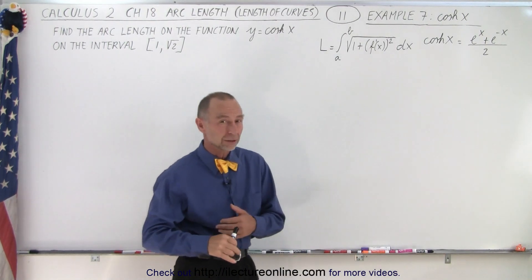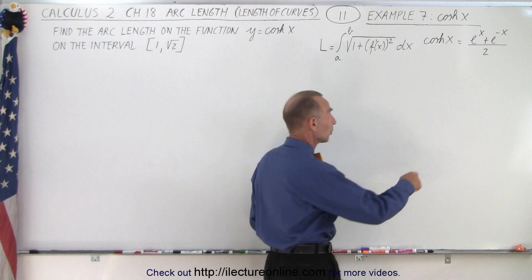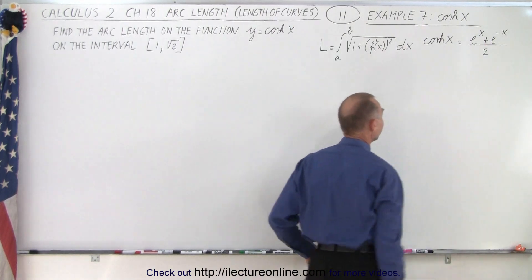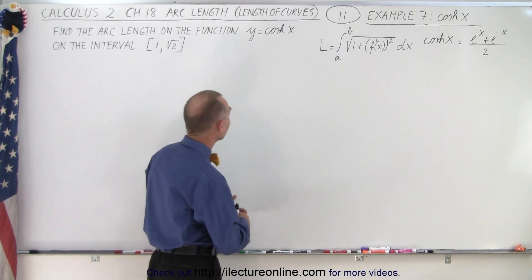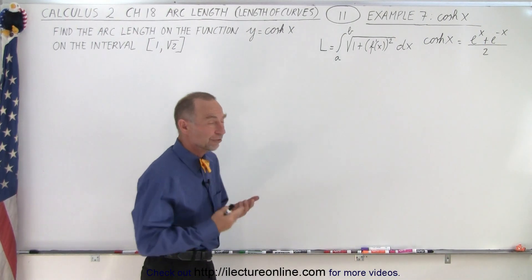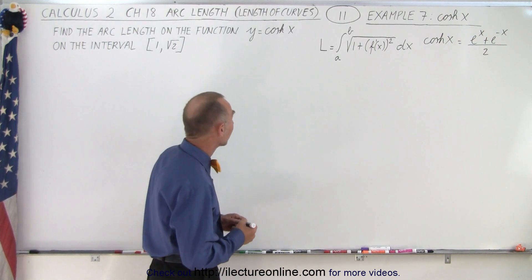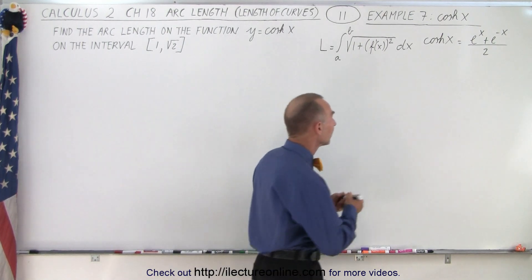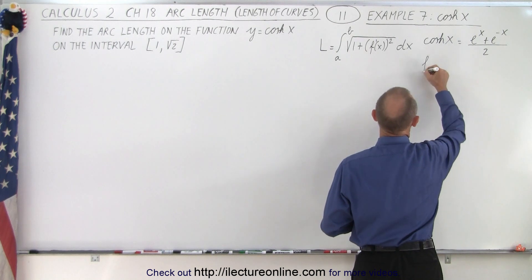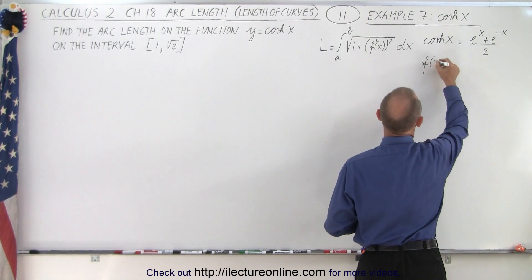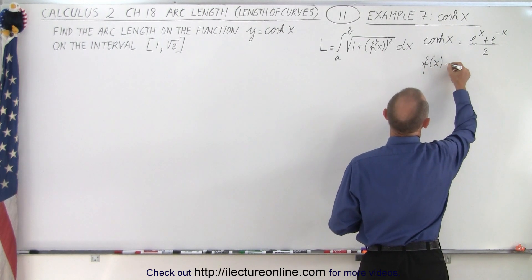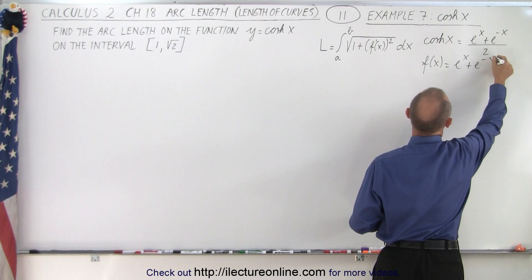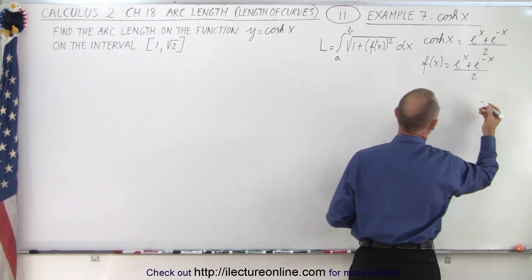Remember the hyperbolic sine — the only difference would be that this becomes a negative right there. So if we're going to define our function as a hyperbolic cosine, we could say that f of x equals e to the x plus e to the minus x, divided by 2.